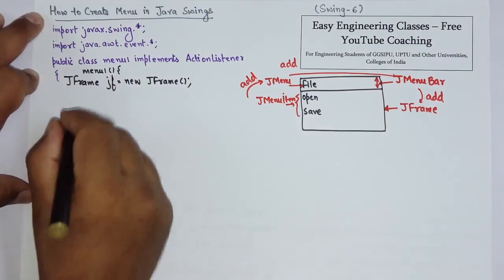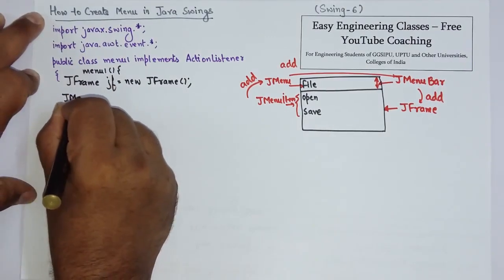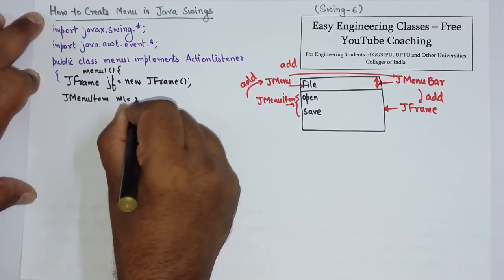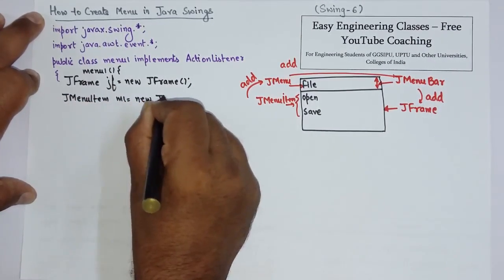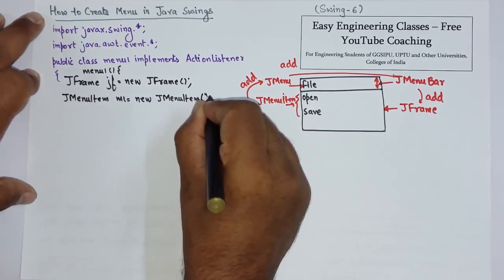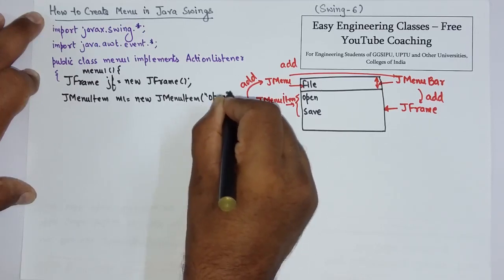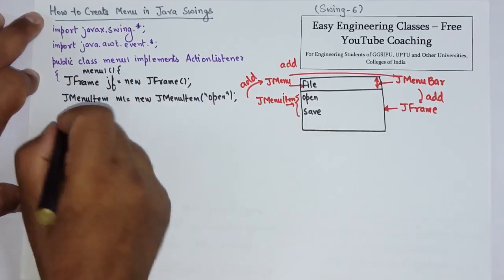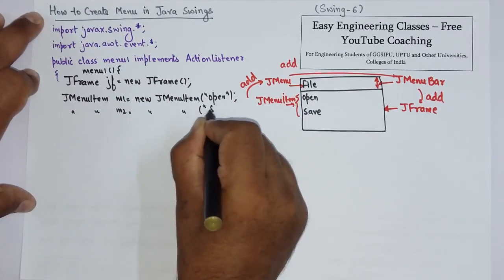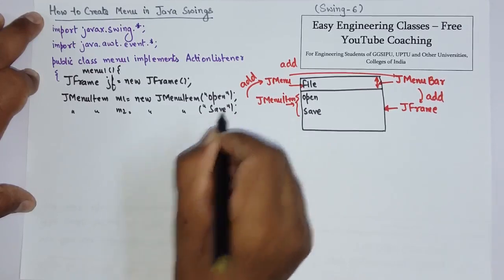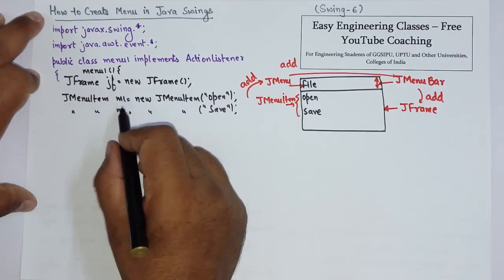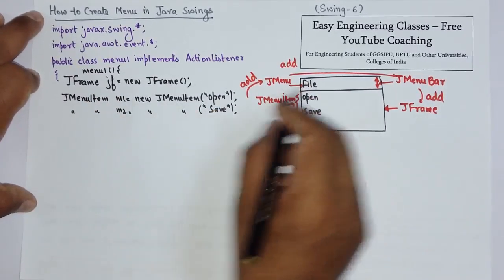So the frame is created. Now create JMenuItem. JMenuItem m1, m2. JMenu items are created, m1 and m2. Now I have to add these menu items to the menu. So create menu.